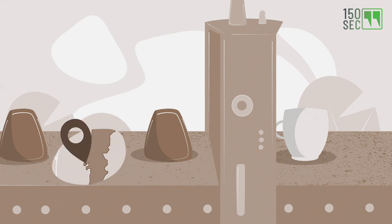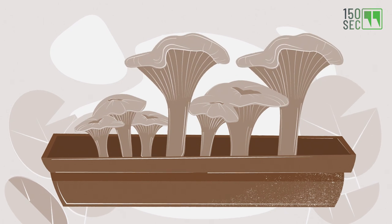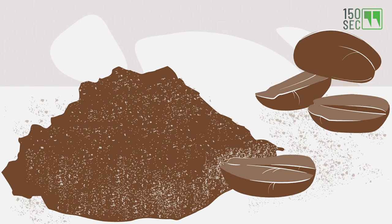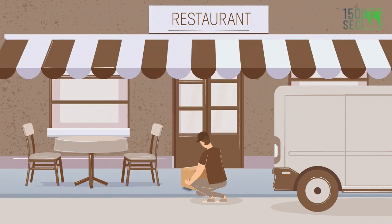In Lisbon, impact entrepreneurs have begun to grow oyster mushrooms by planting them into used coffee grounds. Coffee grounds make ideal soil because they remain sterilized after brewing. They are harvested and delivered to local cafes and restaurants.